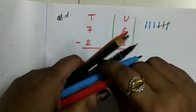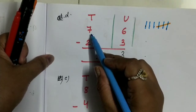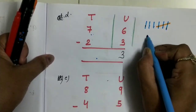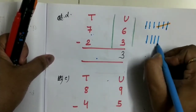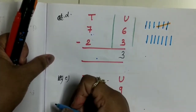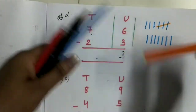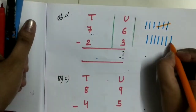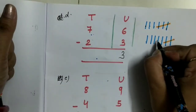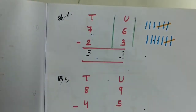Now come to the tens column. In the tens column we have 7 minus 2, so draw 7 lines: 1, 2, 3, 4, 5, 6, 7. Now you have to take away 2 lines, so cut it: 1, 2. So 7 minus 2 will be 1, 2, 3, 4, 5 — it will be 5.